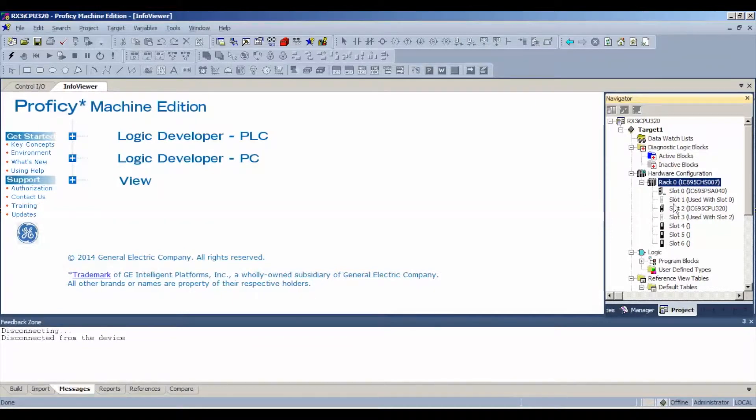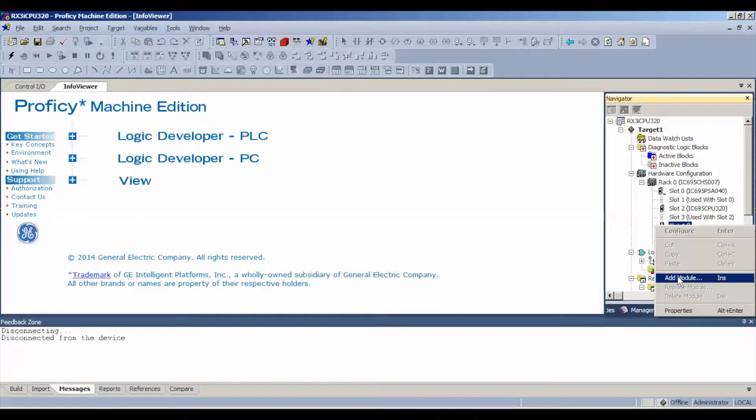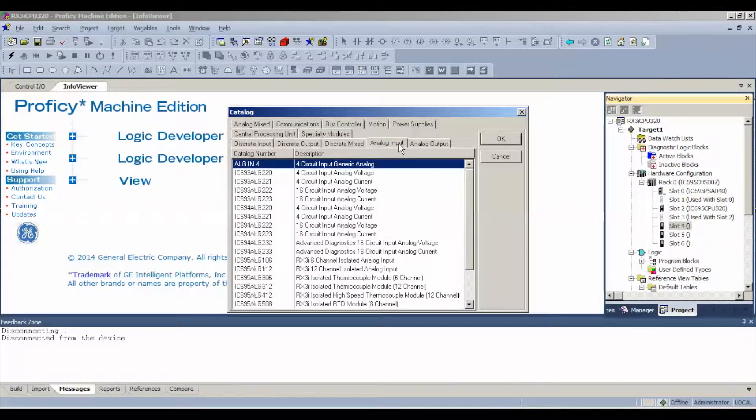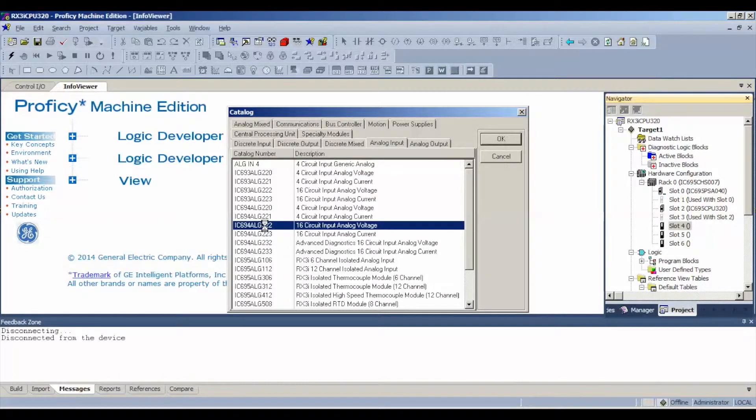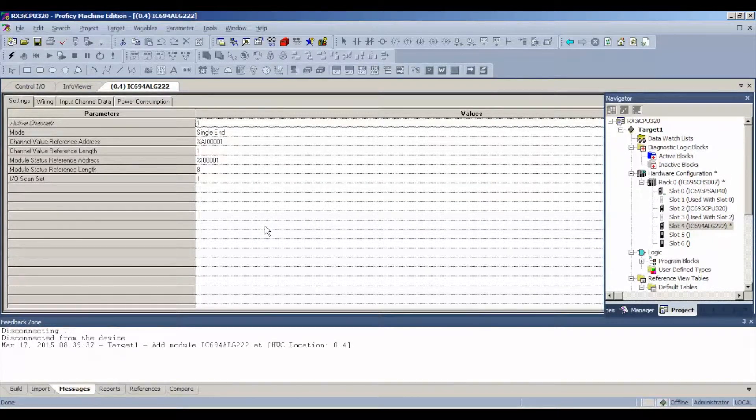My power supply is using two slots, slot 0 and slot 1, and my processor is using two slots as well, slot 2 and slot 3. That leaves me with the next available slot number 4. Now you can either double-click or right-click on slot 4, add module, analog input, and as we said before, it's an IC694ALG222.